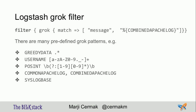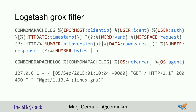Logstash comes with a lot of built-in patterns. We used combined Apache log, but there's also username, letters and numbers, positive integer, syslog, and many more. Combined Apache log always starts with the IP, stores it as 'clientip', followed by the user pattern stored as 'ident', and a number stored as HTTP version — it's a regular expression definition. Here's an example Apache log line: the first IP address gets stored in 'clientip' if the match is successful.